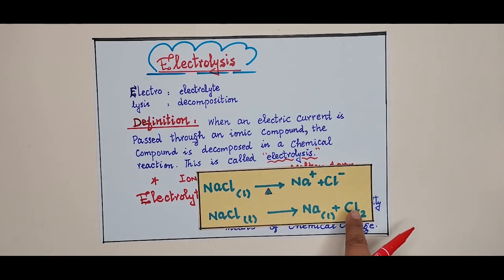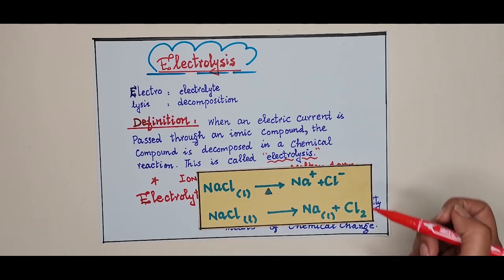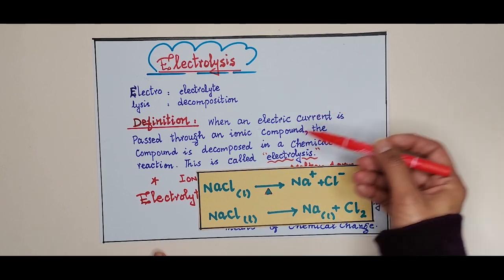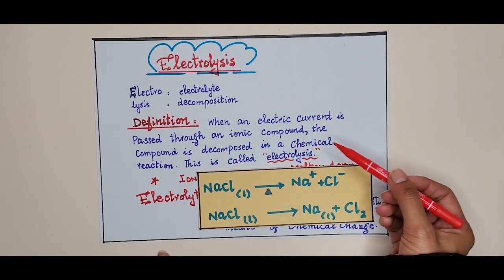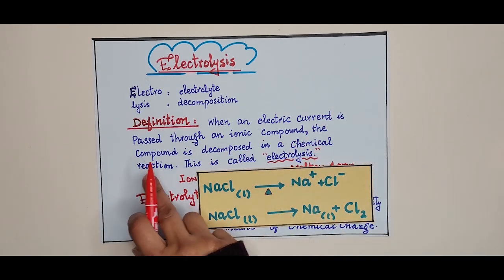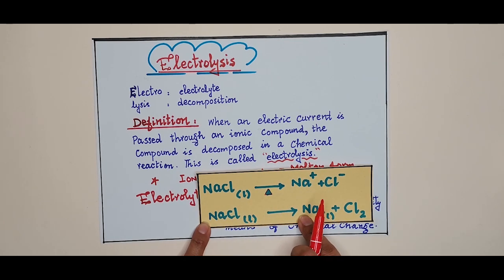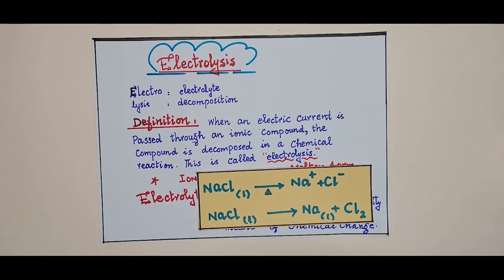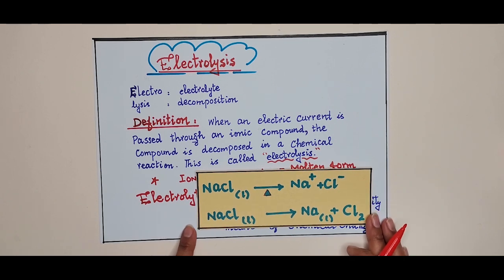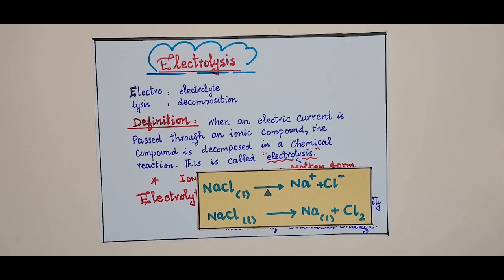To repeat: when an electric current is passed through an ionic compound, the compound is decomposed in a chemical reaction — this is called electrolysis. I hope you have learned well what electrolysis is. See you in the next lesson. Till then, consistency is the key to success.